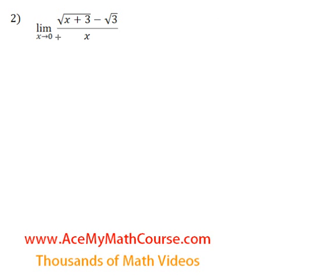Evaluate the limit as x approaches 0 of the square root of x plus 3 minus the square root of 3, all over x. Right away we recognize that if I were to plug in 0 for x, I would get a 0 in the denominator, and that's just not allowed.